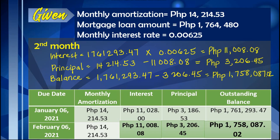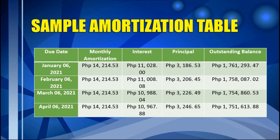The process of calculating interest based on the balance continues until the mortgage loan is fully paid off. Each month, the interest value diminishes while the principal amount increases. After 240 payments, the mortgage is fully paid off. Here is a sample monthly amortization table showing four months of values.